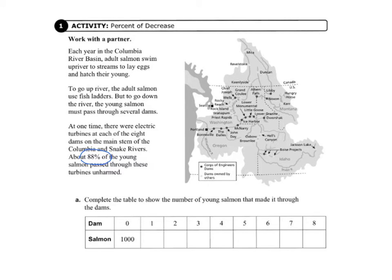Complete the table to show the number of young salmon that made it through the dams. If we look at the first dam, we need to start with before they pass through any dams. So that would be the box that says zero. And before they go through there, there's a thousand salmon. We take the thousand and multiply that by 88%, so that's 0.88, because that's the number that make it through each dam. And when we do that, we get 880. So 880 come through the first dam unharmed.